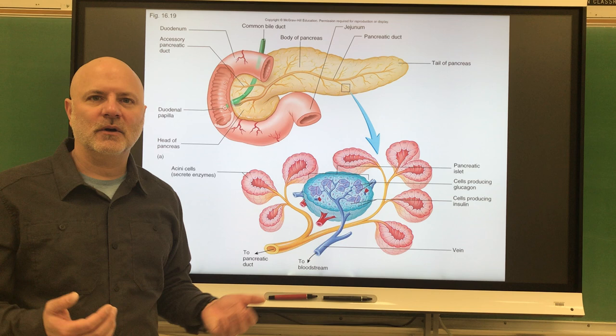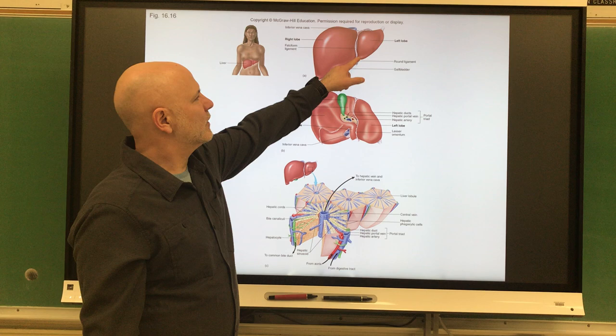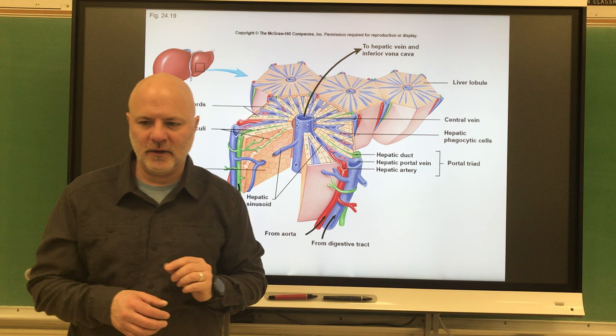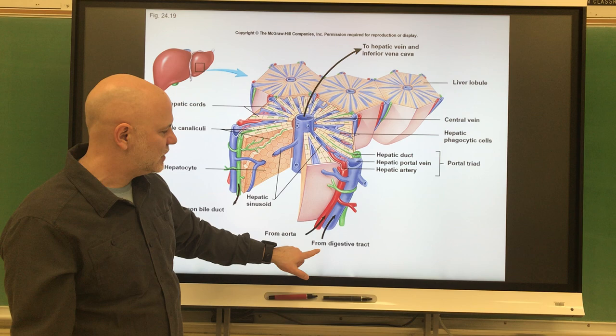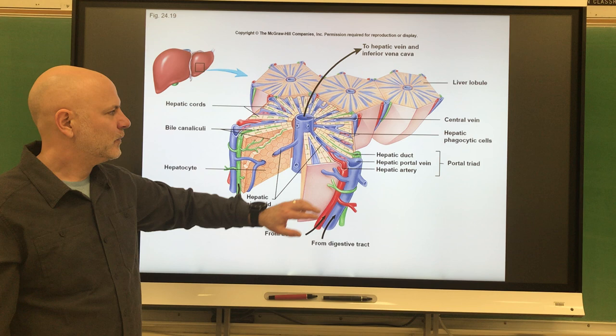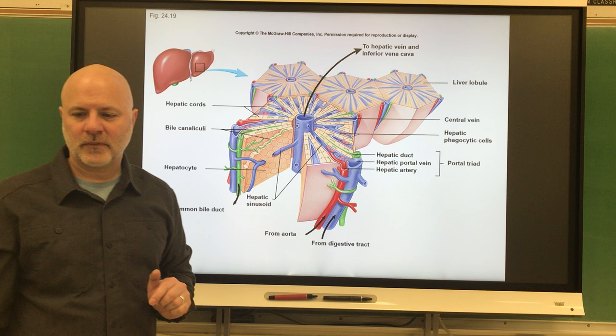The next organ is the liver. In general, the liver is a central relay station for nutrients and has many functions. Blood from our digestive tract goes through our liver, and the liver absorbs and redistributes those nutrients.